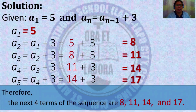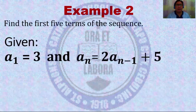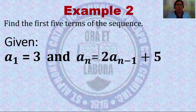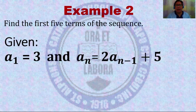So, the next four terms of the sequence are eight, eleven, fourteen, and seventeen. Let us have another example. Find the first five terms of the sequence, given the first term equivalent to three, and the recursive formula a_n = 2 * a_{n-1} + 5.